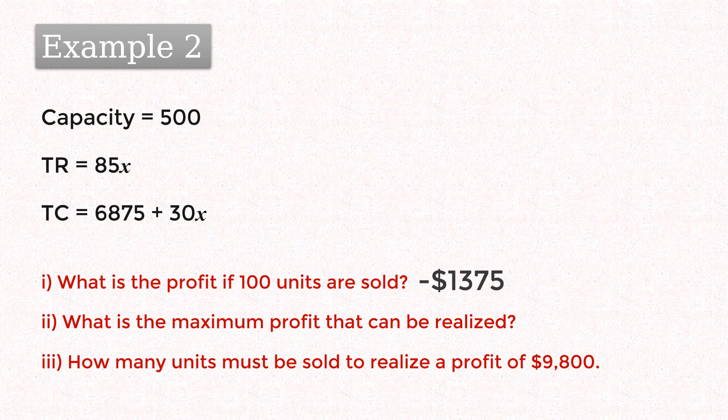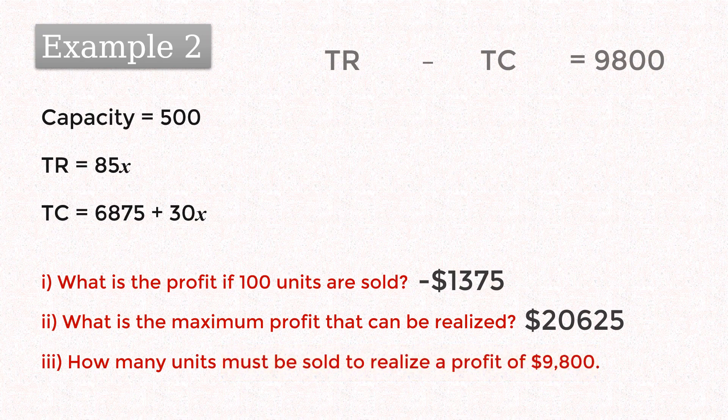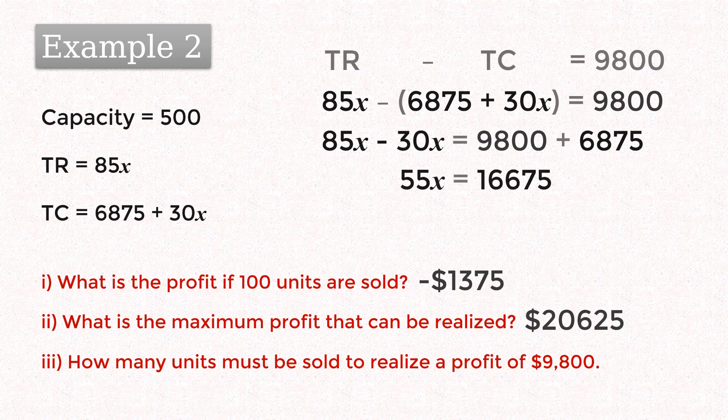Next, we want to calculate the number of units to be sold to realize a profit of $9800. In other words, total revenue minus total cost equals $9800. And on subtracting and solving for x, we obtain 303.18, which we have to round up to 304.